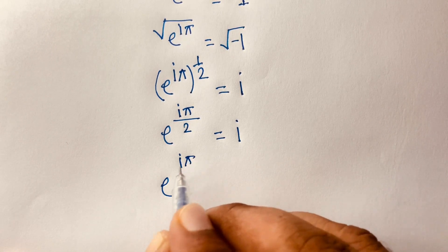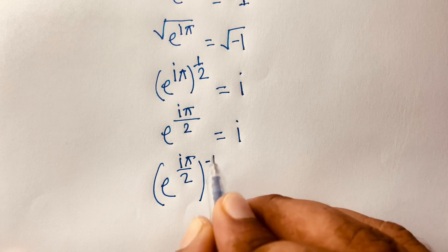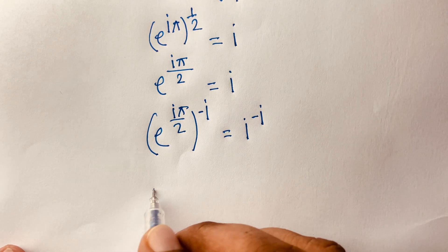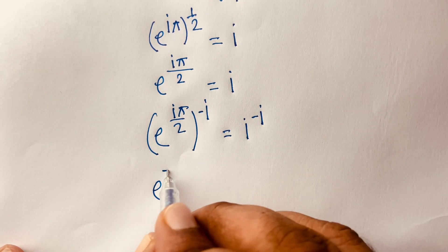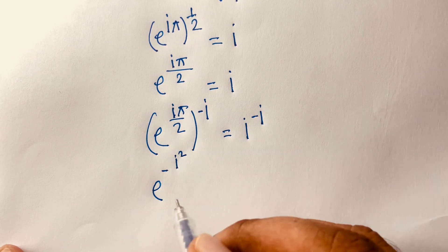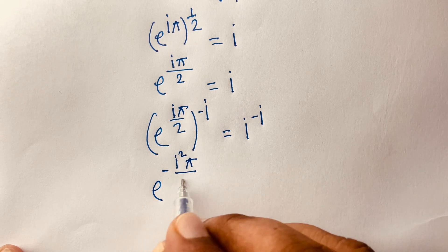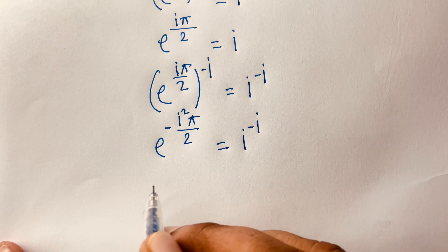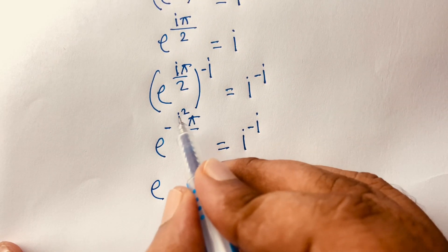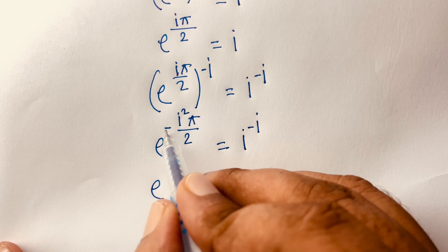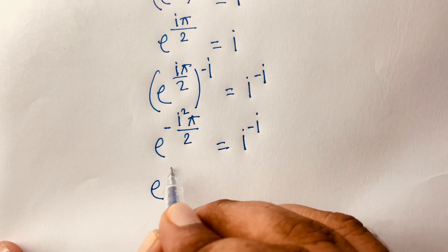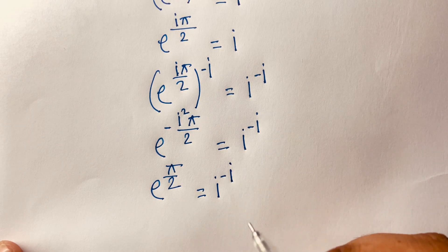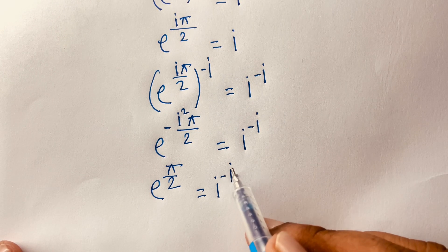Then I raise both sides to the power minus i. So e to the power i*pi over 2 raised to minus i gives e to the power (i times minus i times pi over 2). Since i times i equals i squared equals minus one, this becomes e to the power pi over 2, which equals i to the power minus i.